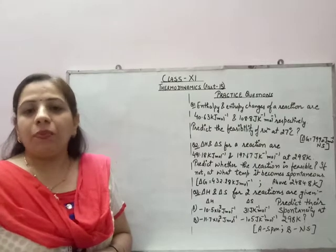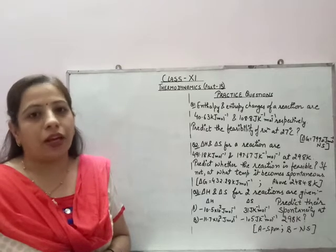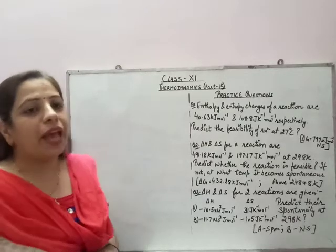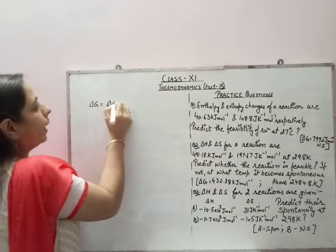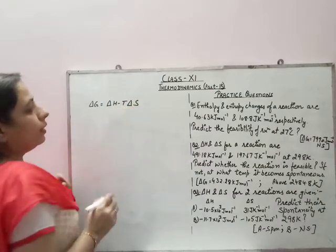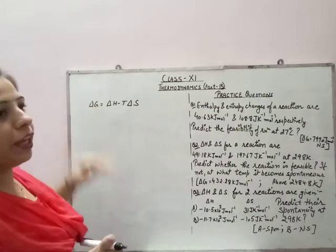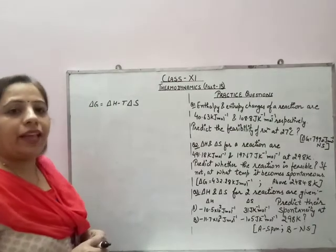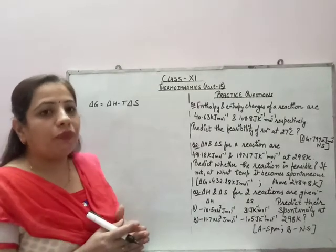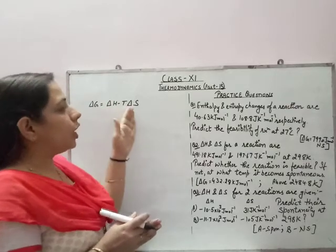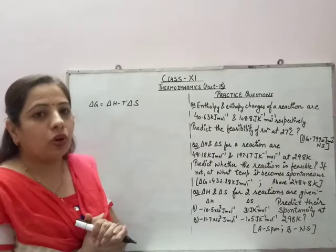Hello everyone. In the previous video we discussed about Gibbs energy and the expression for Gibbs energy change, that is the Gibbs-Helmholtz equation. The equation was: delta G equals delta H minus T delta S. This was at constant temperature. This Gibbs energy function was required to tell exactly whether the reaction is spontaneous or not.